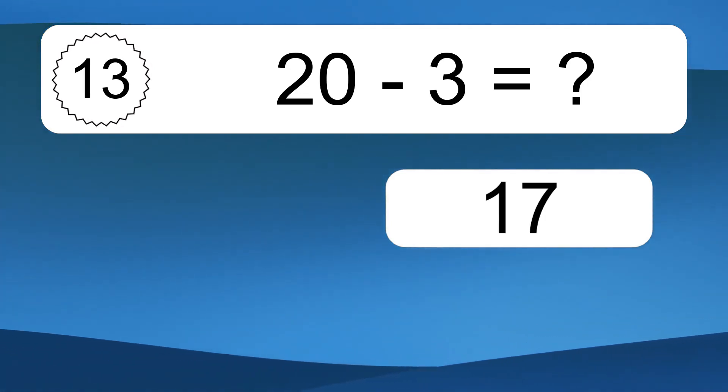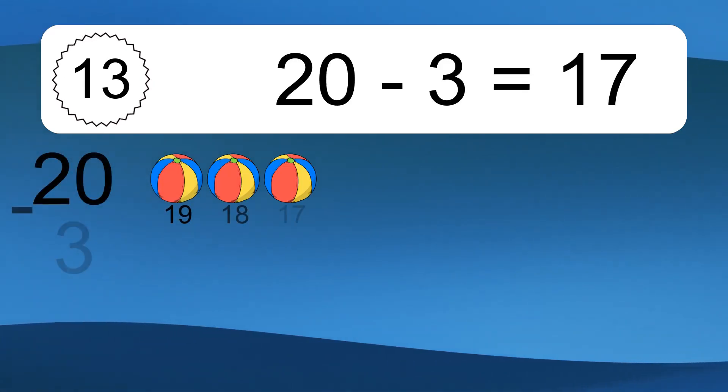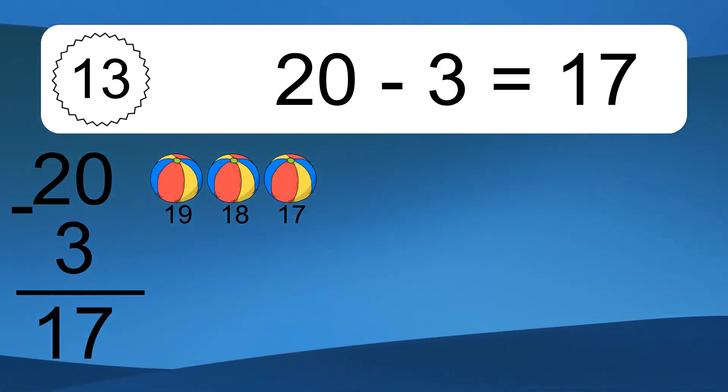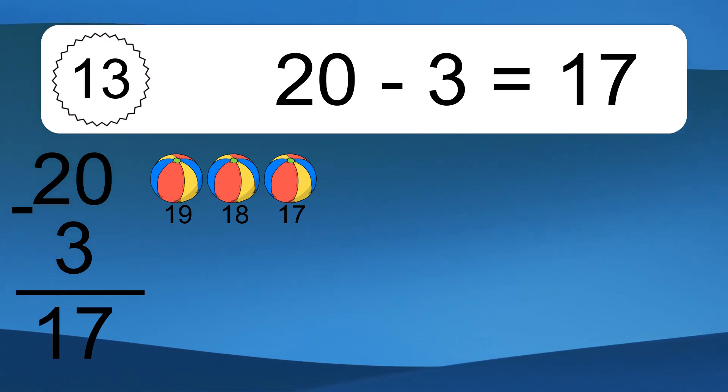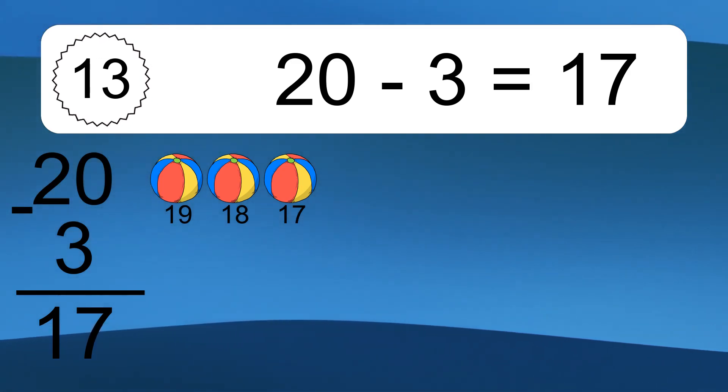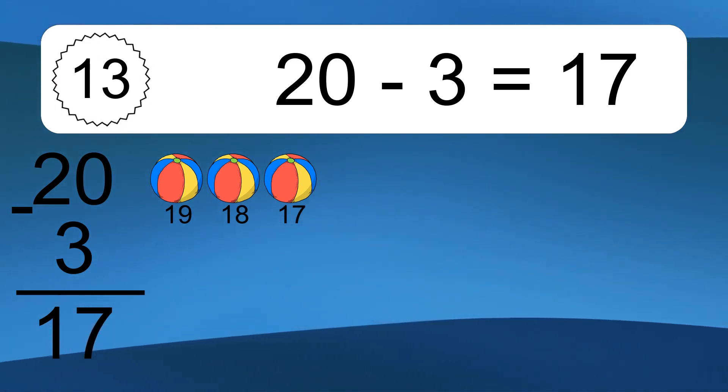20 minus 3 equals 17. Let's count it. 19, 18, 17.